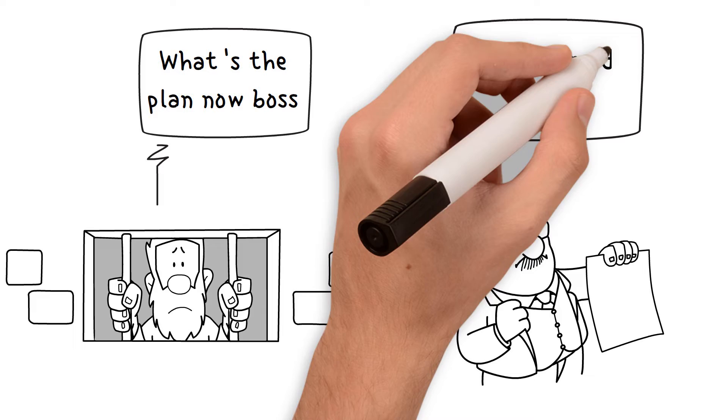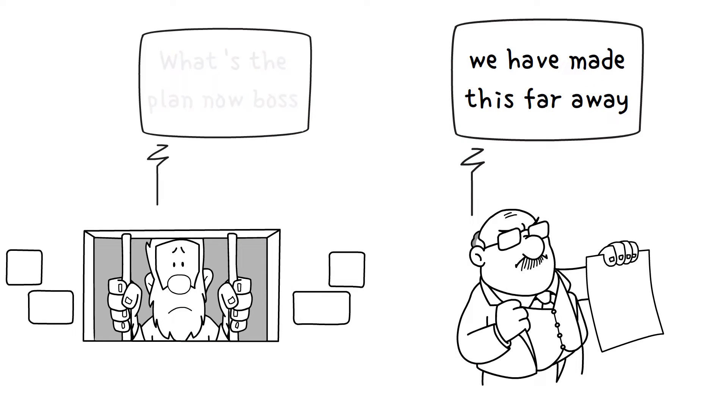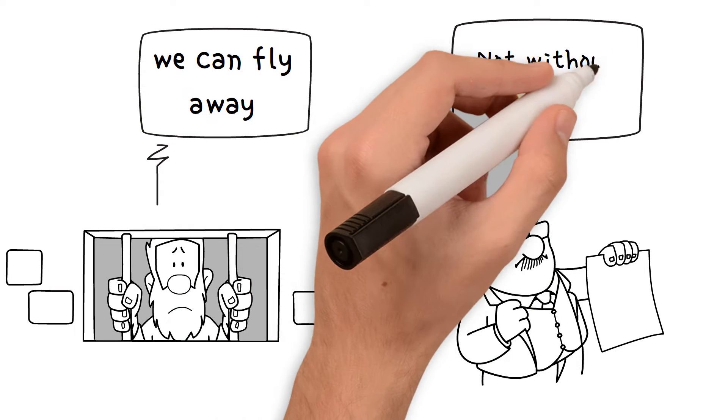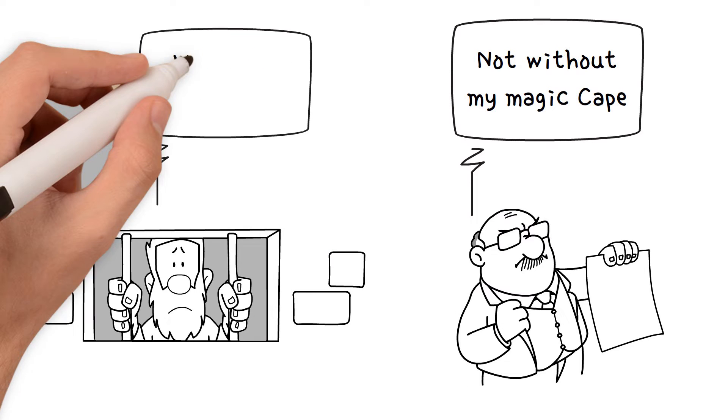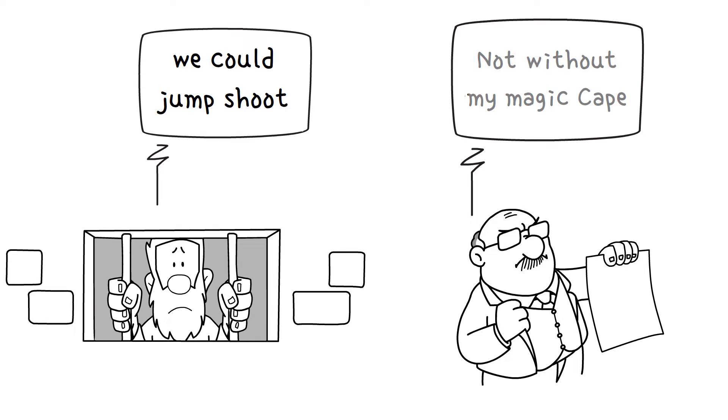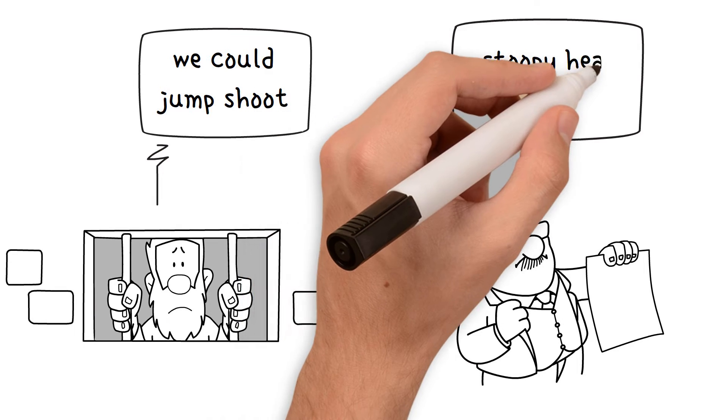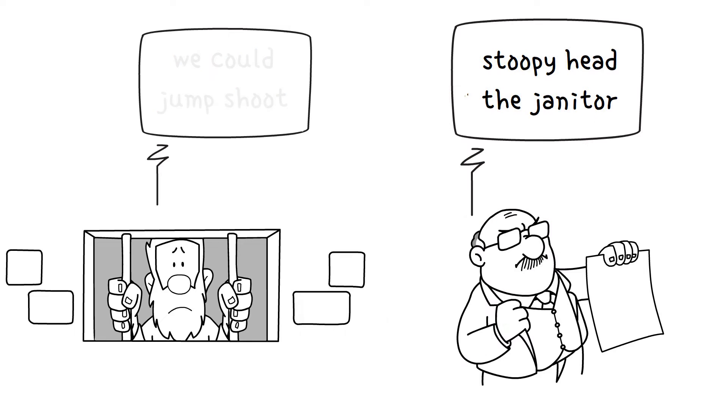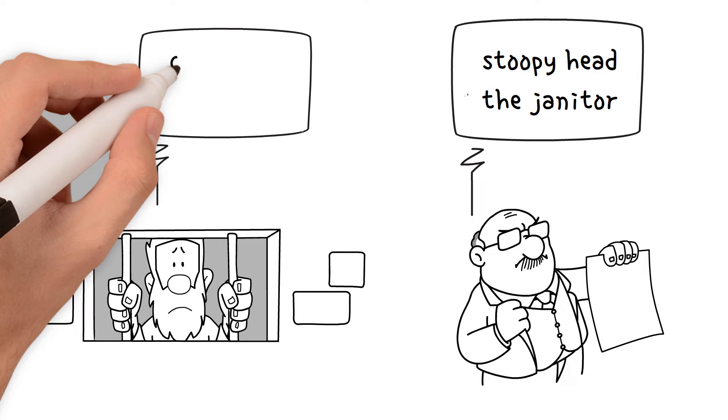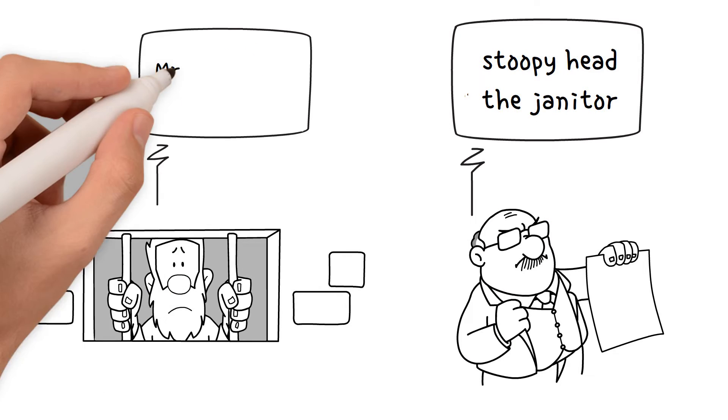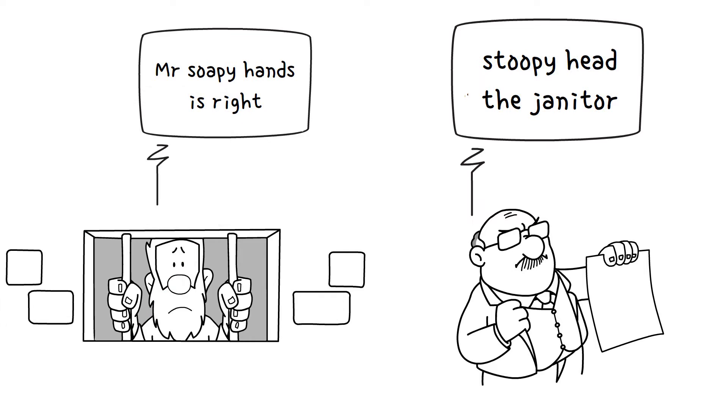Prisoner 2: What's the plan now, boss? Boss: I don't know, we made it this far. Prisoner: We could fly away, you fly right boss? Boss: Not without my magic cape. Prisoner: Hmm, we could jump, shoot for those bushes. Boss: What, are you a stupid head? The janitor would have to clean us off the pavement. Prisoner 2: I wish I could be a janitor.